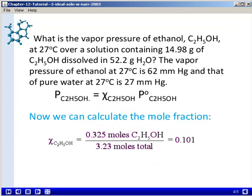To calculate the mole fraction of ethanol, it will be the number of moles of ethanol, 0.325, divided by the total number of moles, 3.23. This gives us a mole fraction of 0.101.